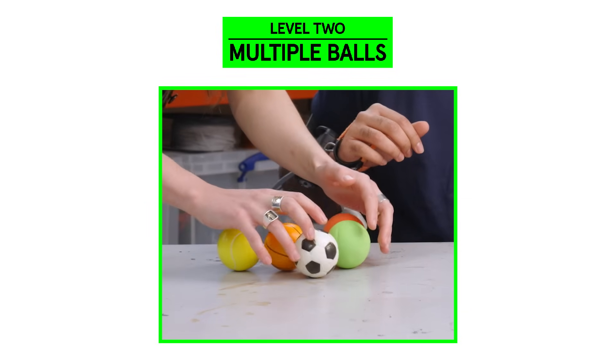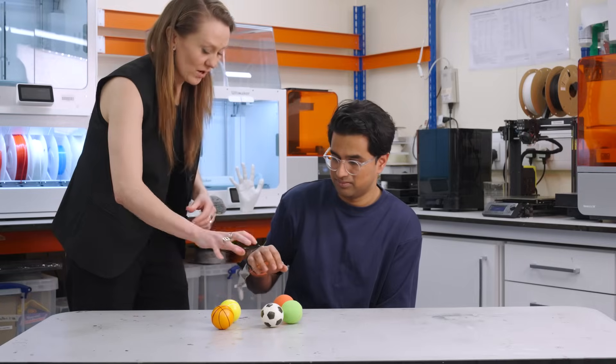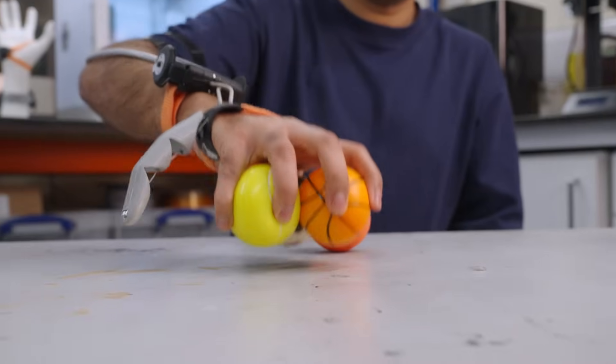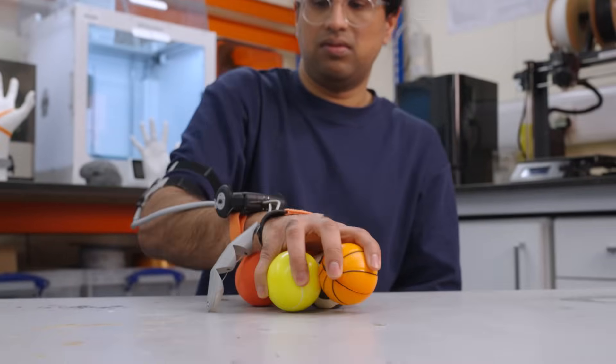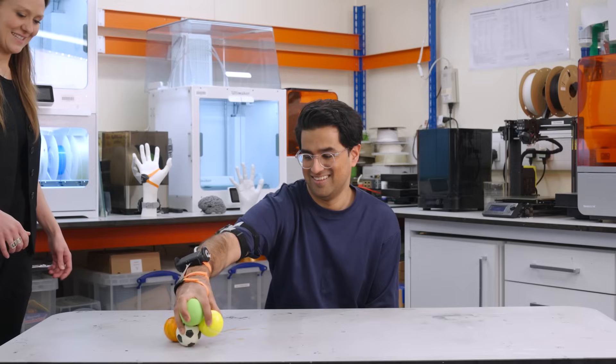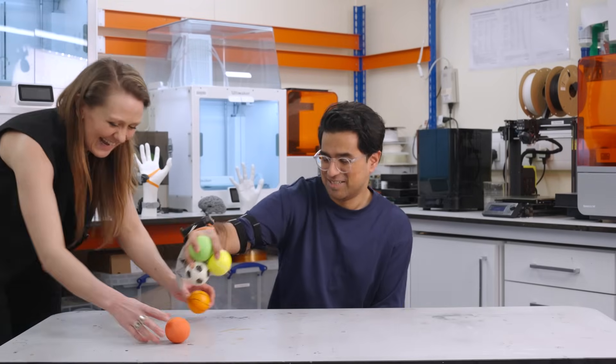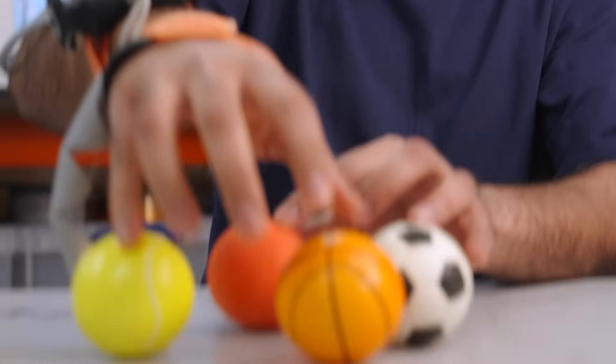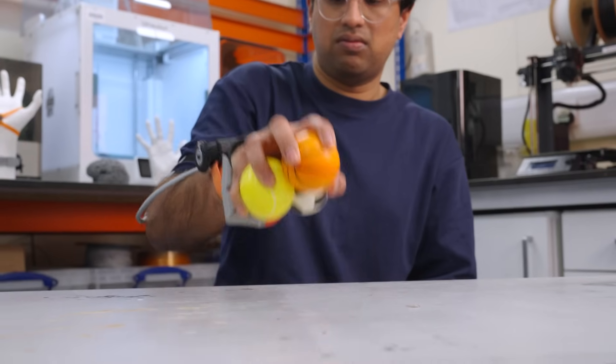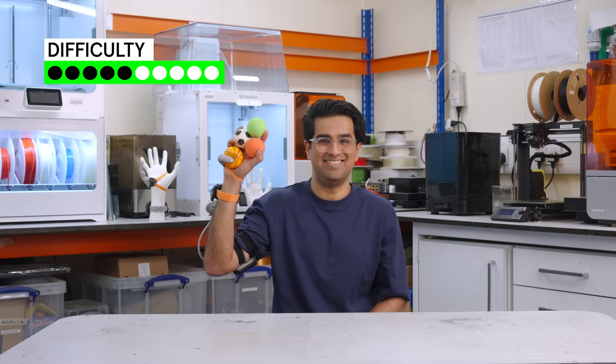This is our next object task. Pick up as many balls as you can with your biological hand and then use the third thumb to pick up the last ball or an extra one. The goal of this test is to determine what the third thumb can do to expand the function of the hand overall. Difficulty, six out of ten.